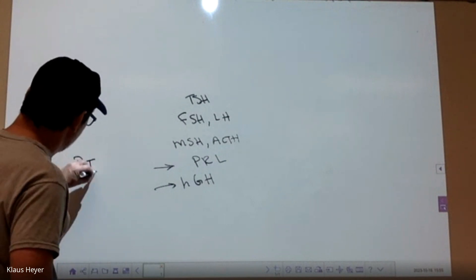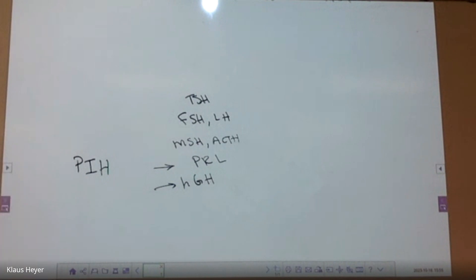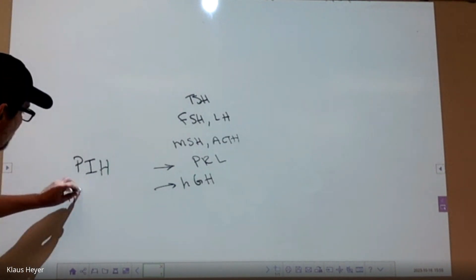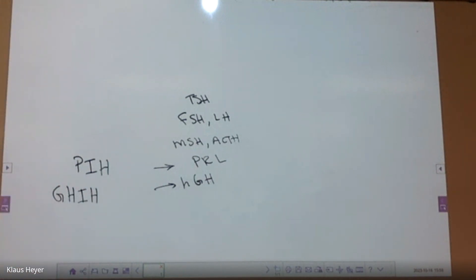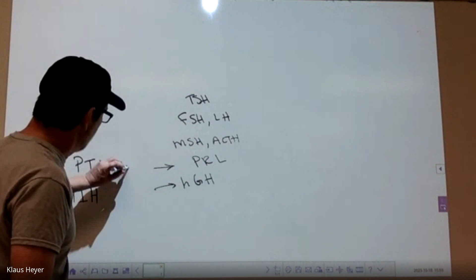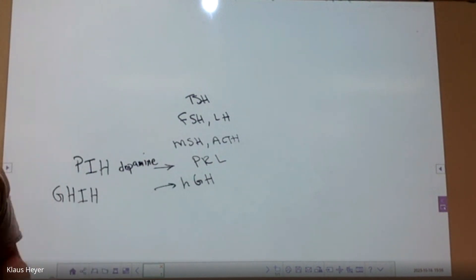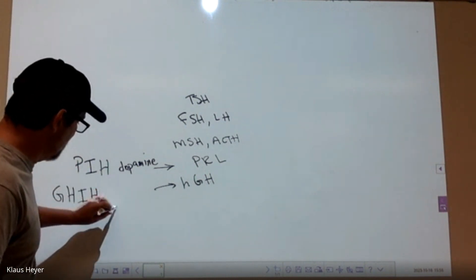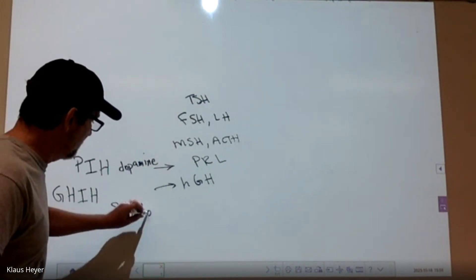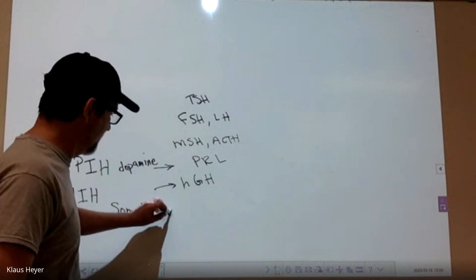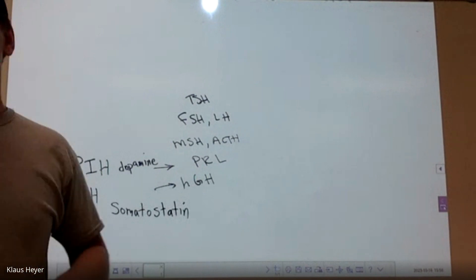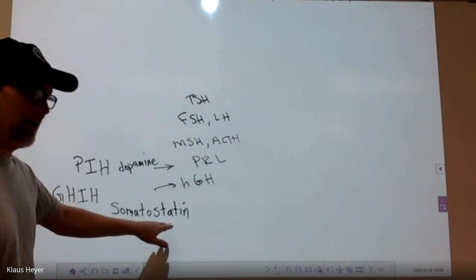There's one called prolactin inhibiting hormone, just like we had prolactin releasing hormone, and we have growth hormone inhibiting hormone. These two do not work on negative feedback. Another name for PIH is dopamine — so sometimes they give dopamine to slow down the whole childbirth process. The other word for GIH is somatostatin — somato means growth, and statin you can think of as meaning 'to stop.'